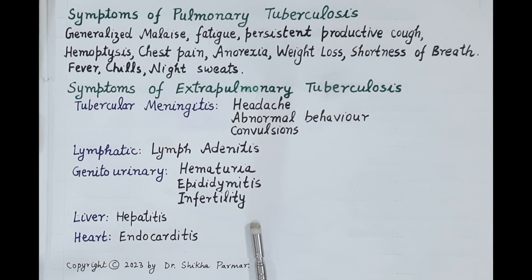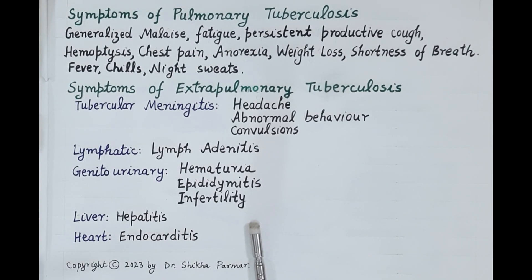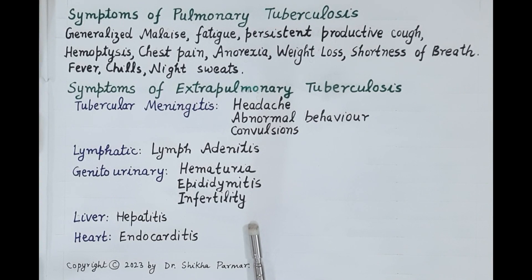That is a brief overview of the types of tuberculosis, pathophysiology and stages of pulmonary tuberculosis, its risk factors and symptoms. If you find the video useful, kindly like, subscribe and share. Thanks for watching.